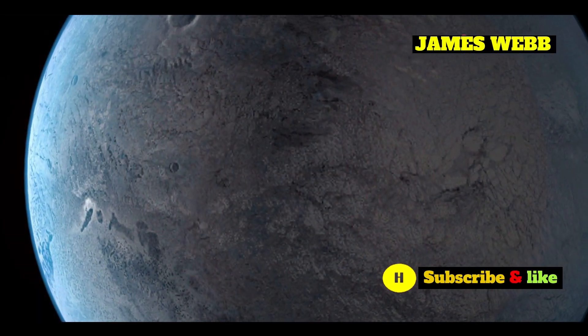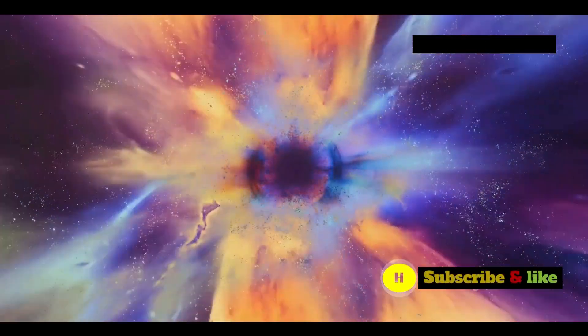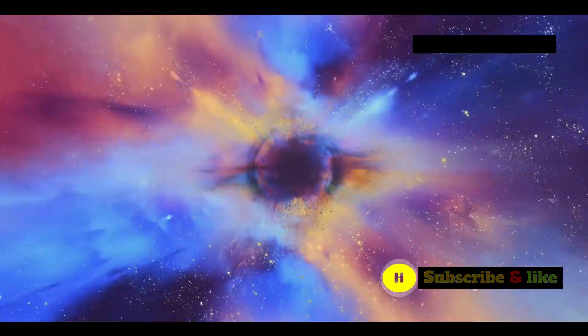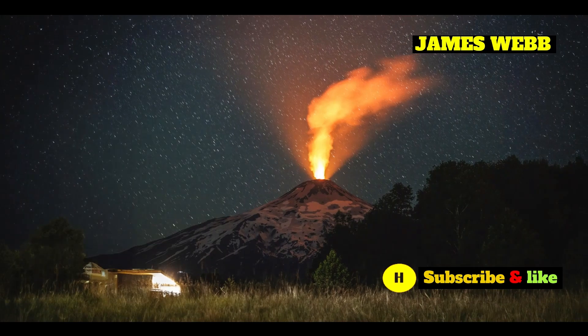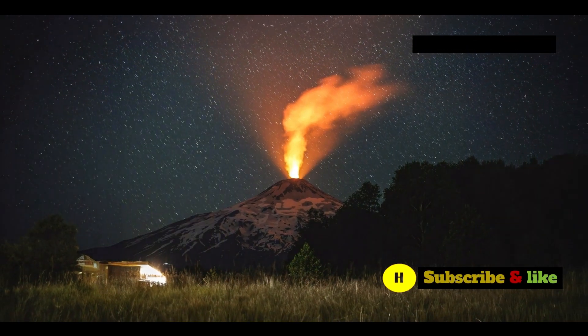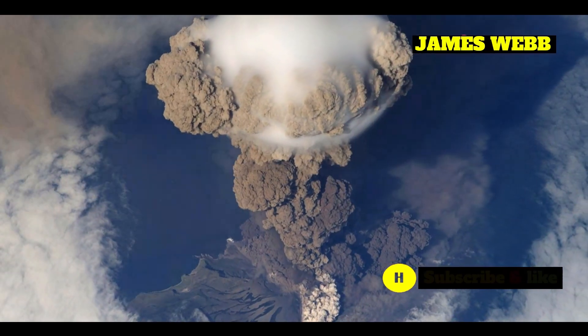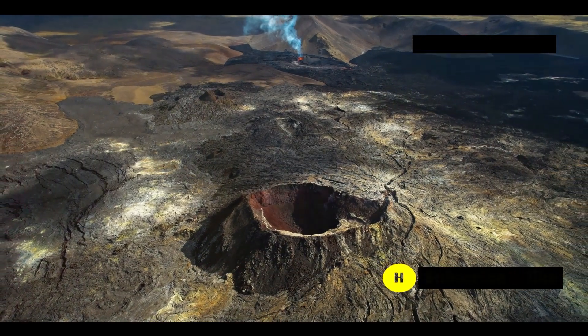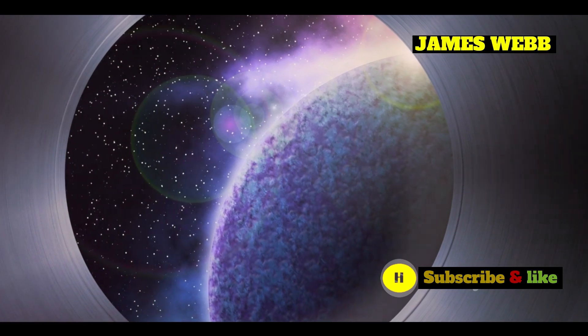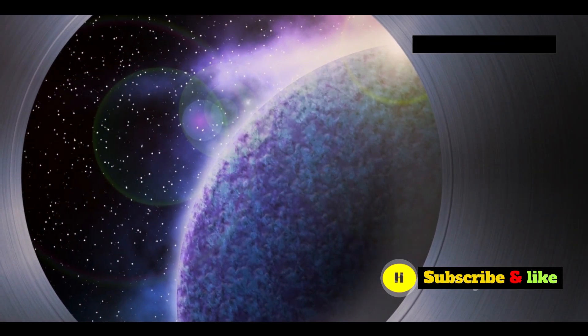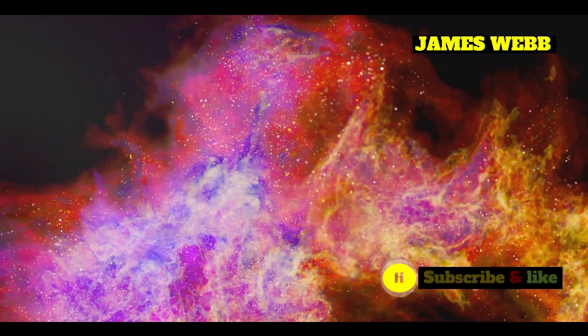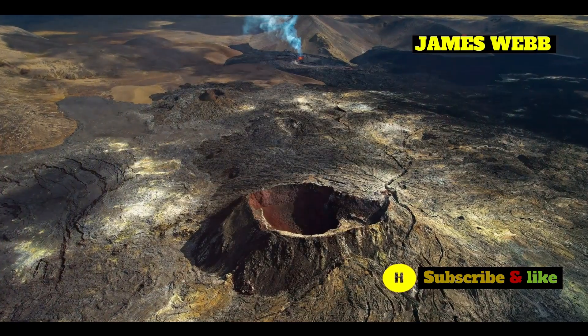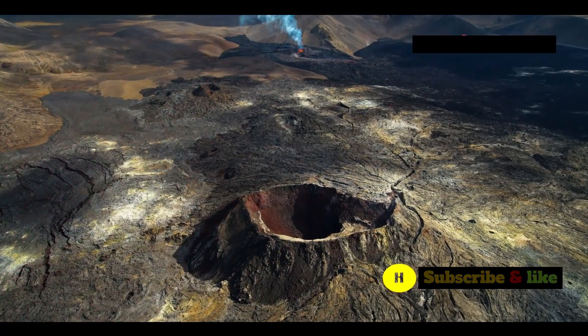The intense heat on 55 Cancri E plays a crucial role in forming its secondary atmosphere. The planet's interior is also incredibly hot, and this heat can cause gases trapped within the planet's rocks to escape to the surface through a process called outgassing. Think of it like a pot of boiling water. As the water heats up, bubbles of steam rise to the surface and escape into the air. Similarly, on 55 Cancri E, the intense heat drives gases from the planet's interior to erupt onto the surface, forming a new atmosphere.